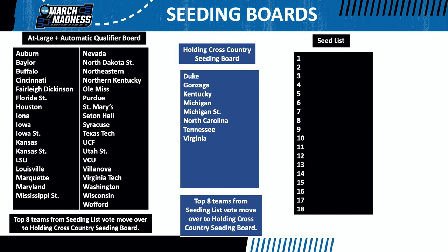As you can see here, the top eight vote-getters in alphabetical order were Duke, Gonzaga, Kentucky, Michigan, Michigan State, North Carolina, Tennessee, and Virginia.